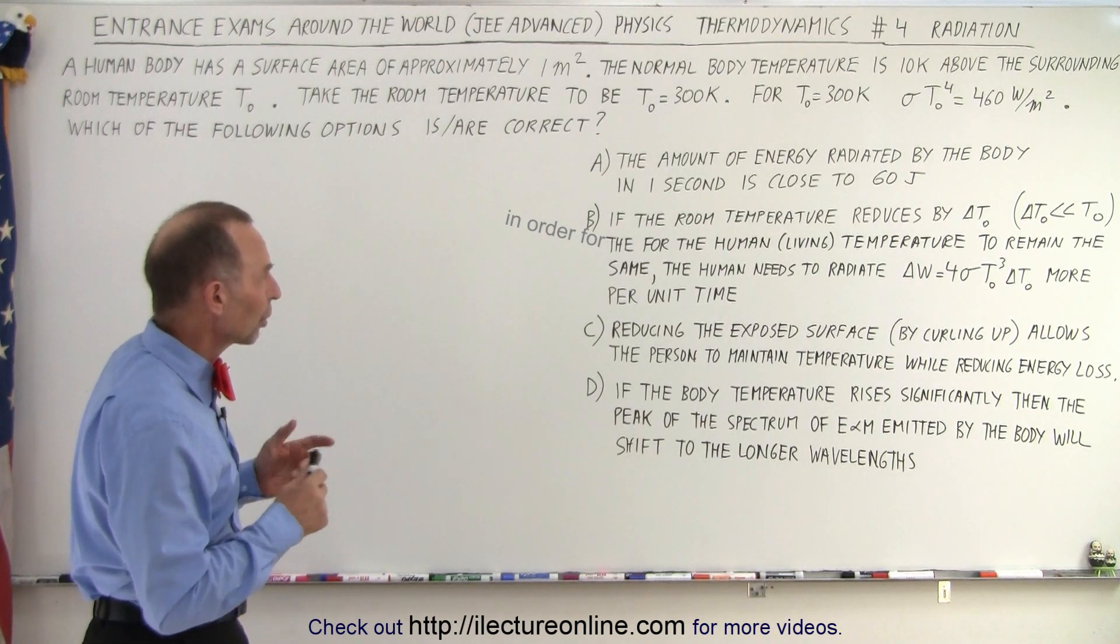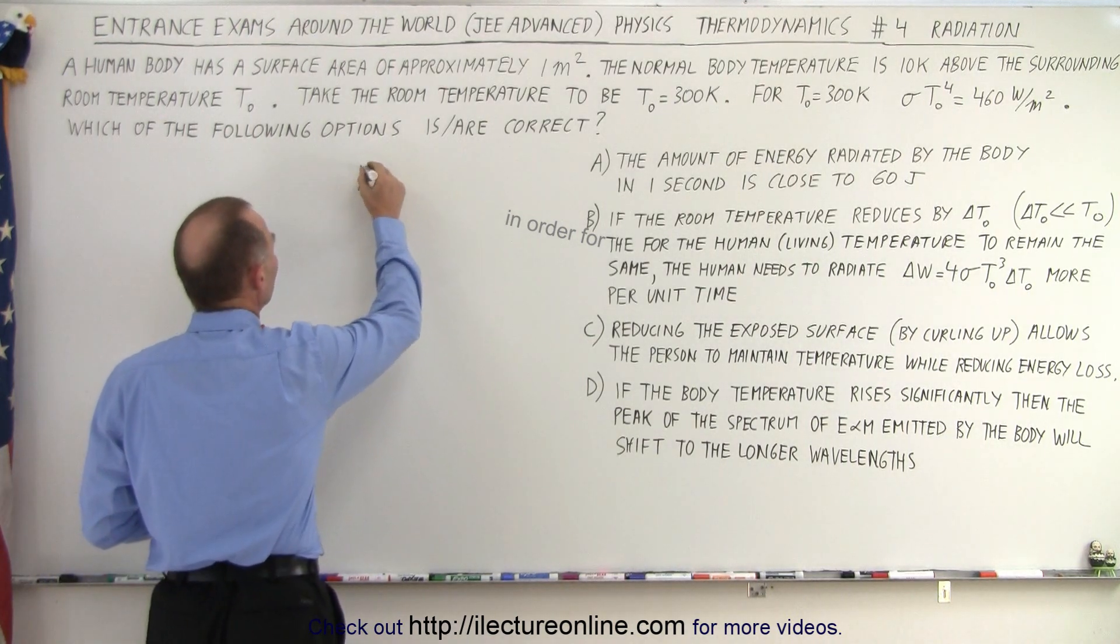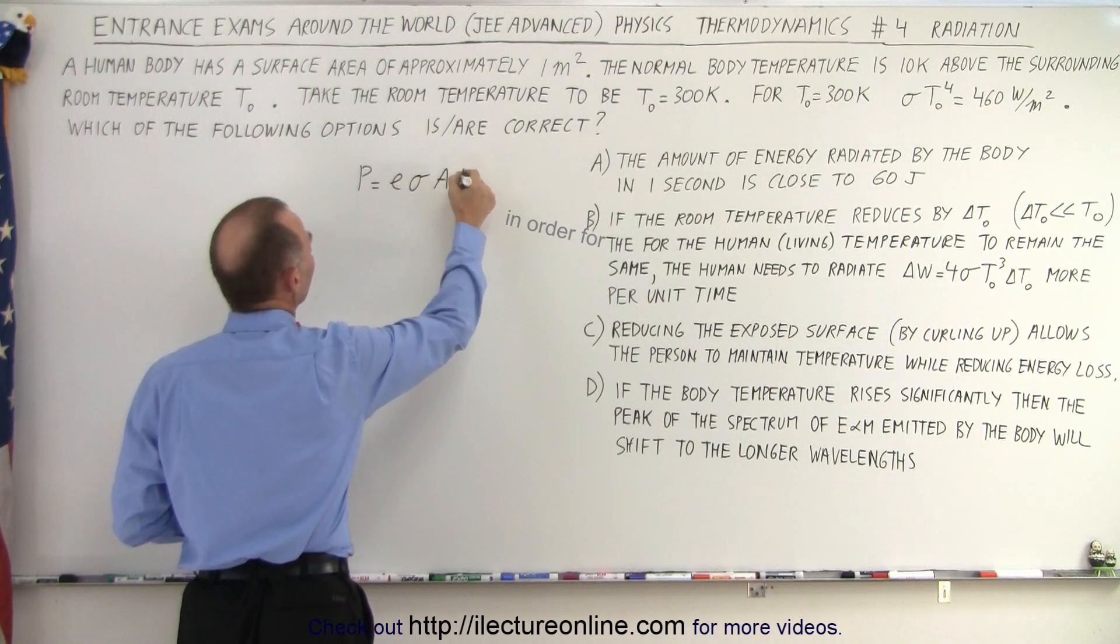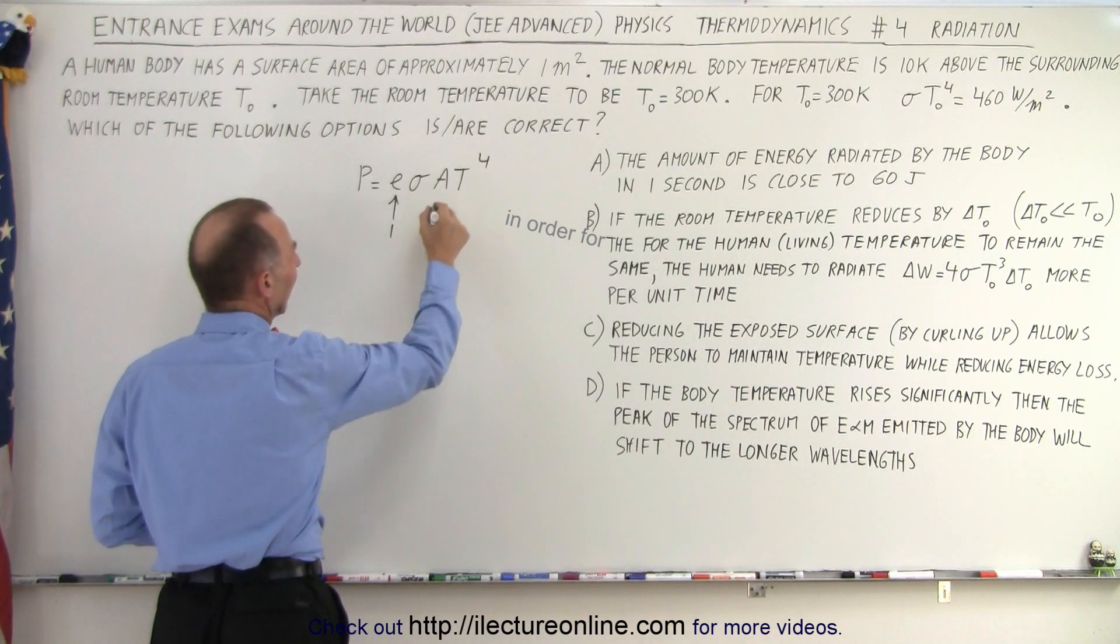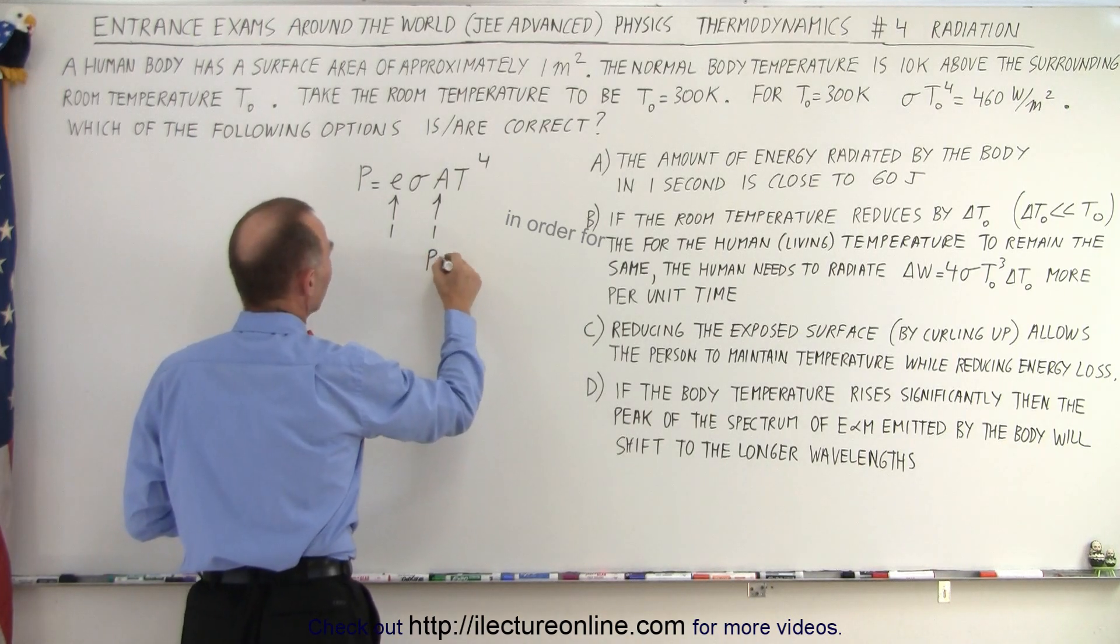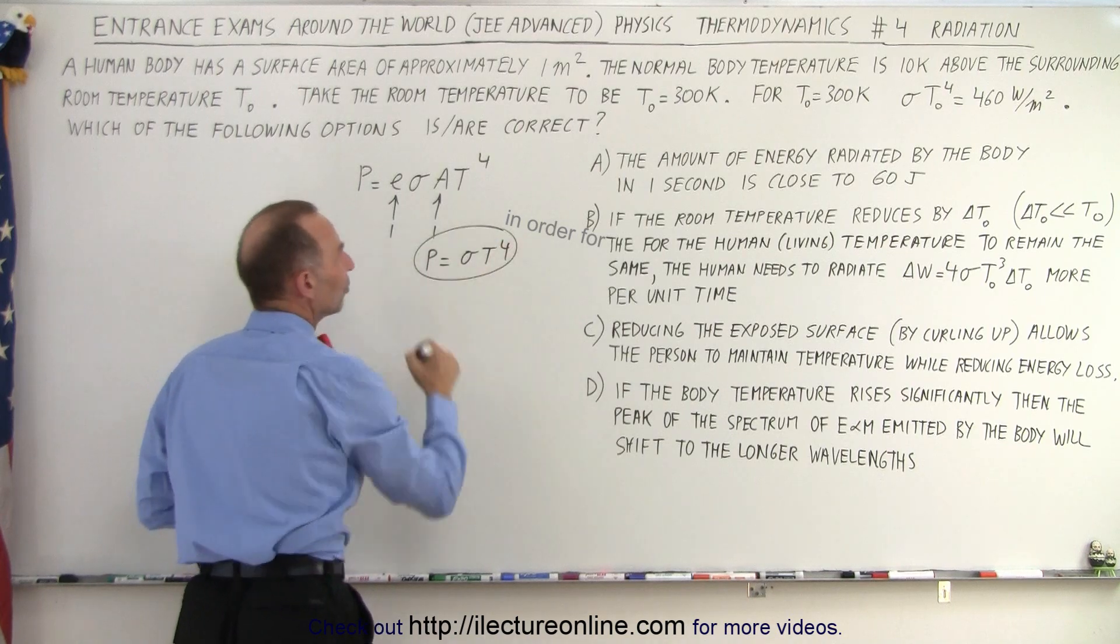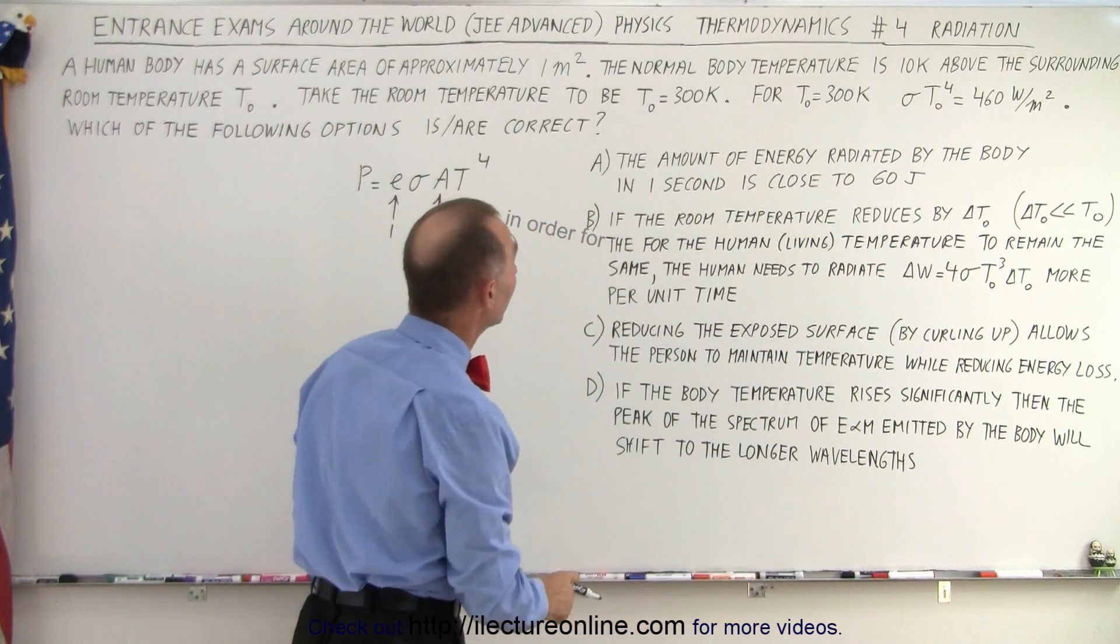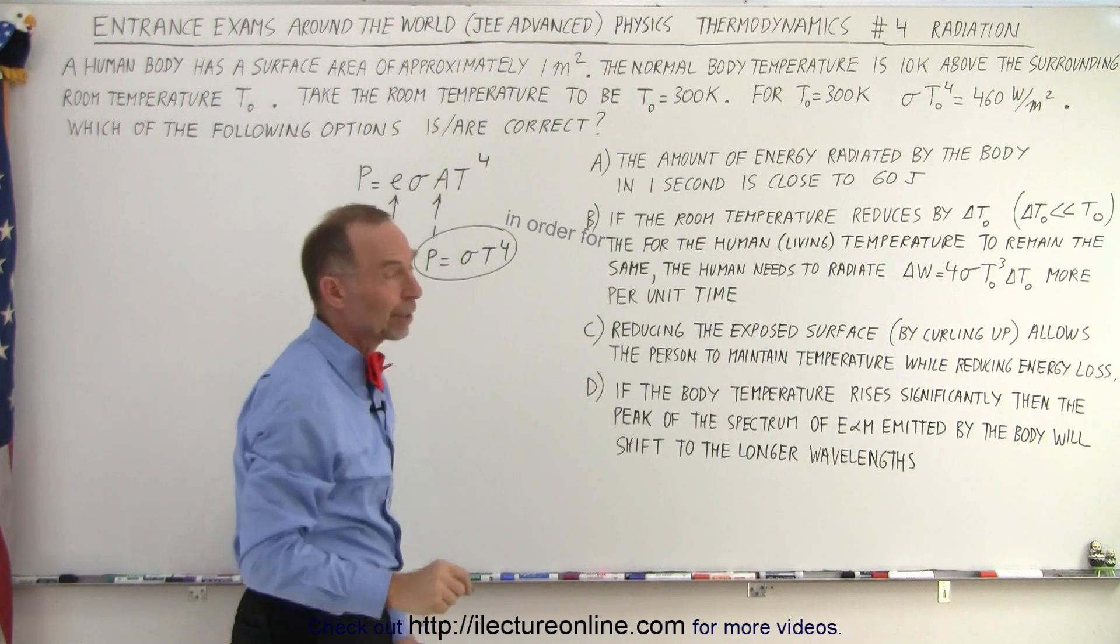All right, let's work our way through that a little bit. First of all, let's look at the Stefan-Boltzmann's law. We know that the power radiated is equal to the emissivity times sigma times the area times temperature to the fourth power. But in this case, E is approximately equal to one, and the area is approximately equal to one. And that's where we have the equation that the power is equal to sigma times T to the fourth power, which is what we have over there. And they claim that it's 460 watts per square meter for a temperature, and T sub-naught is the room temperature equal to 300 K.